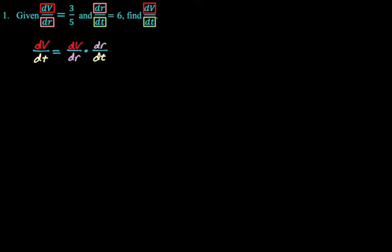So to find dV/dt, all I need to do is take the value of dV/dr, which is three-fifths, and multiply it by the value of dr/dt, which is six, which gives me 18-fifths. And that's the end of that problem. So that's a chain rule problem. Look out for that. You're going to see that kind of frequently on the free response questions later in May.